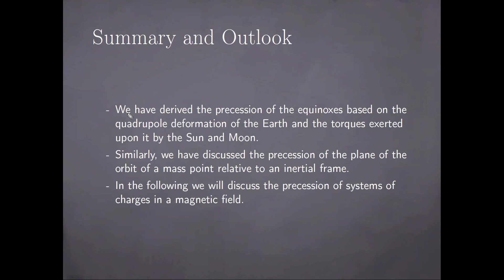In summary, we have derived the precession of the equinoxes based on the quadrupole deformation of the Earth and the torques exerted upon it by the Sun and Moon. Similarly, we have discussed the precession of the plane of the orbit of a mass point relative to an inertial frame. In the following, we will discuss the precession of systems of charges in magnetic fields. With that being said, thank you very much for watching. I hope you found this discussion worth your time, and I will catch you later. Goodbye.